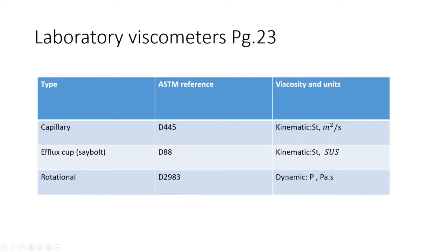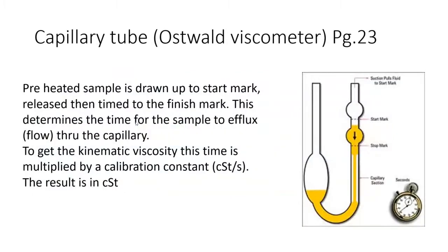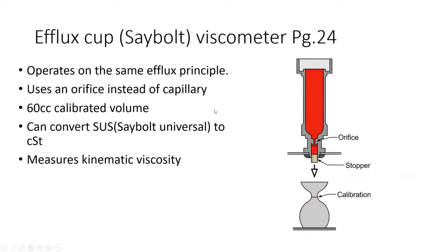The capillary tube — also called the Ostwald viscometer: preheat a sample, draw it up to a start mark, release it, and time it from the start mark to the stop mark. The time for the sample to efflux through the capillary, multiplied by a calibration constant specific to that device, gives the result in centistokes. This is just gravity and time — no force applied.